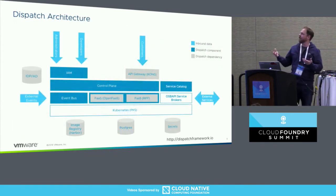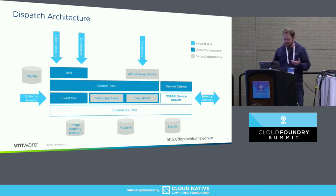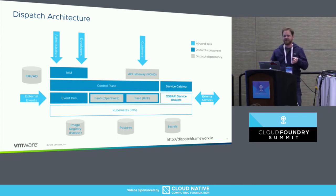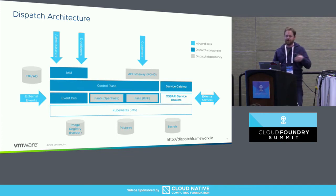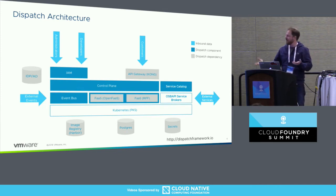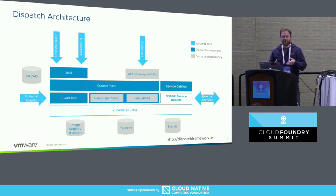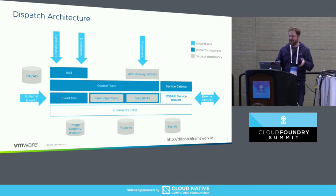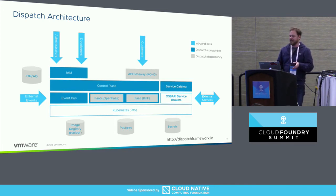This is a simplified view of what Dispatch looks like architecturally. The control plane is a whole suite of microservices that do the various management pieces. We've got our IAM that connects to your existing OIDC or OAuth2-compatible identity provider. We've got an image registry — currently we use the internal Docker registry, but this could be Harbor, which is a VMware open source product, or any Docker-compatible registry. We store our state in Postgres, and we store secrets in Kubernetes secrets.